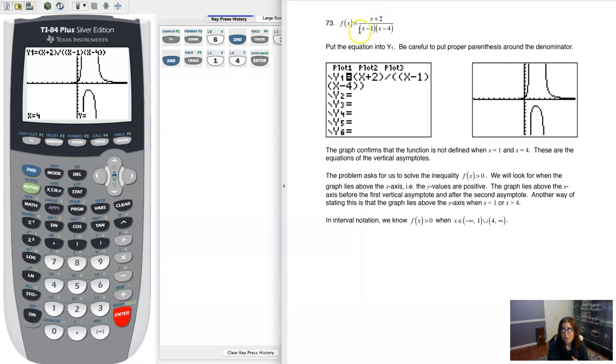If there was a factor common to the numerator and denominator, like if this was x minus 1 and this was x minus 1, then I'd have a hole. But that's not the case. So anyways, that's how we solve that one. All right, thanks so much everyone, bye.